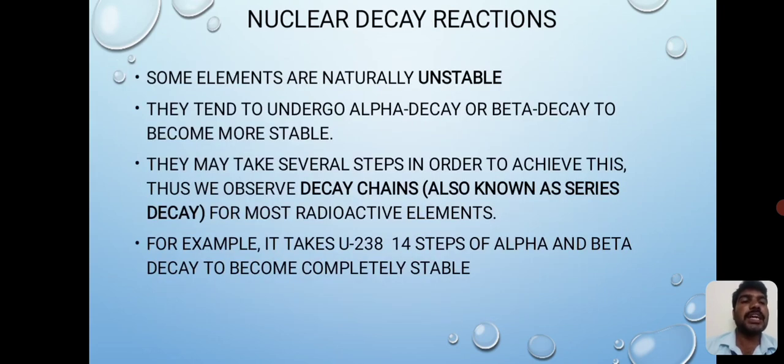Nuclear decay reactions. Some elements are naturally unstable. They tend to undergo alpha decay or beta decay to become more stable. They may have to take several steps in order to achieve this. Thus, we observe decay chains for most radioactive elements. For example, uranium-238 takes 14 steps of alpha and beta decay to become completely stable.